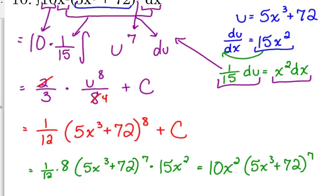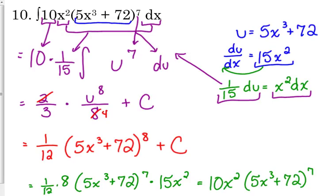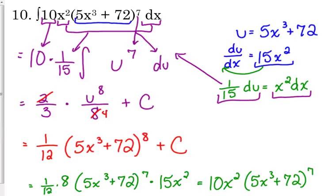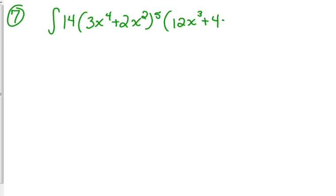So, let's take a look at number 7. If we had done number 7 with integration instead of what they did with the write 14 as a factor of 6, that sort of thing. Let's look at how we would have done that. Number 7 is the integral of 14 times 3x to the 4th plus 2x squared to the 5th times 12x cubed plus 4x dx.